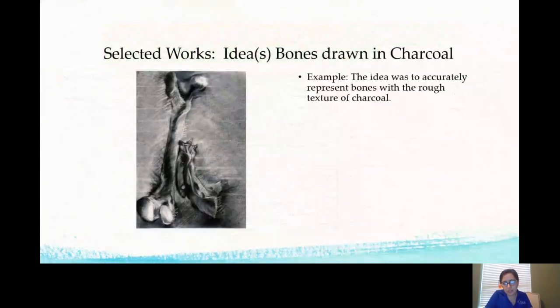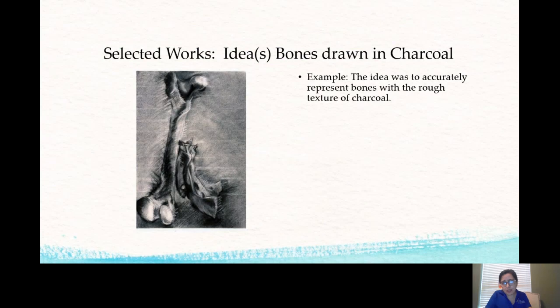So I'm going to give you an example that I took and I wrote about. So here was a student that was doing their sustained investigation with charcoal drawings and they were focusing specifically on human bones. So in their selected works, if this was one of their works, for their ideas, the example they could have written down was the idea was to accurately represent bones with the rough texture of charcoal. So that would be a perfect idea that he could maybe elaborate a little more if he wants to, he doesn't have to, for his selected works under the idea box.